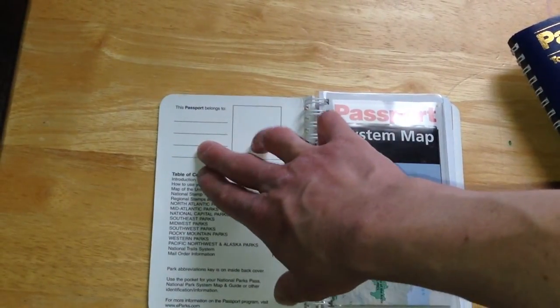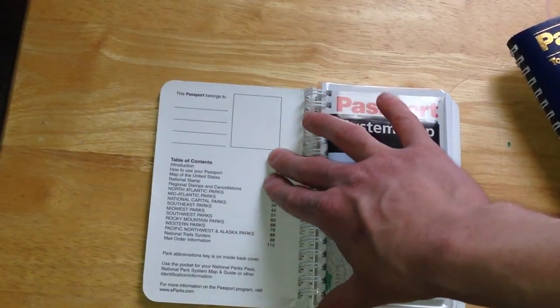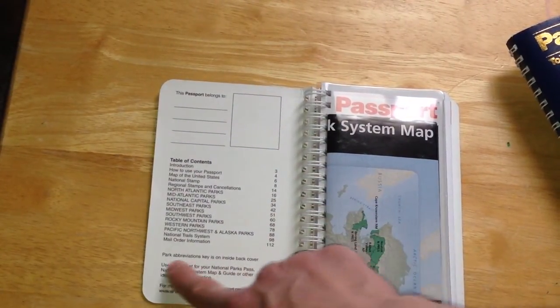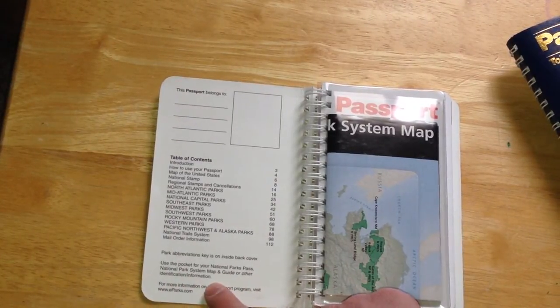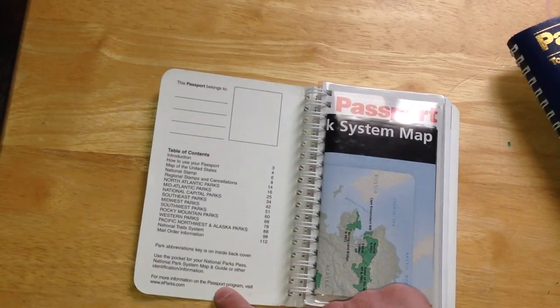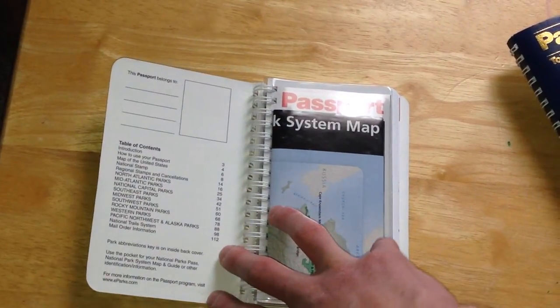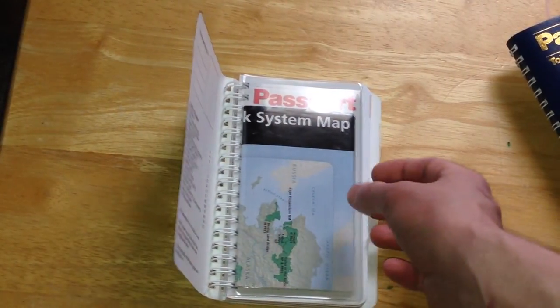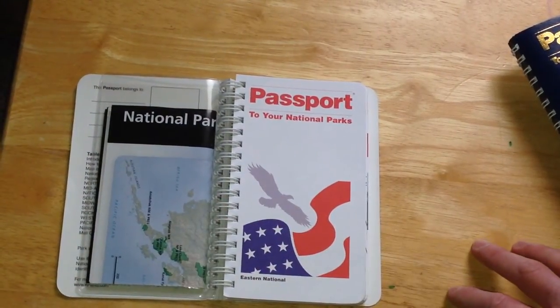Inside your cover, it says 'Passport belongs to' and you've got a nice space where you can put a picture of yourself. You've got a table of contents, park abbreviations key which is on the back cover, as well as all the relevant information at eparks.com. Each one of these comes with a national parks system map in this little plastic sleeve. It shows all of our national parks within the continental US, Alaska and Hawaii.